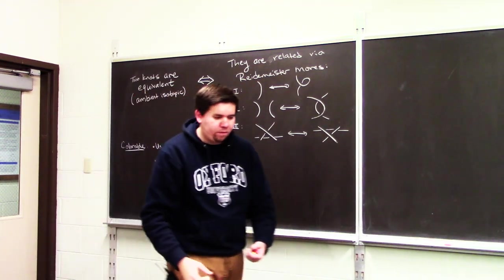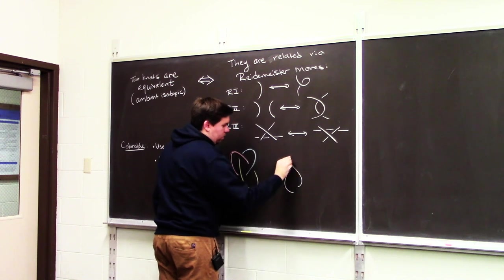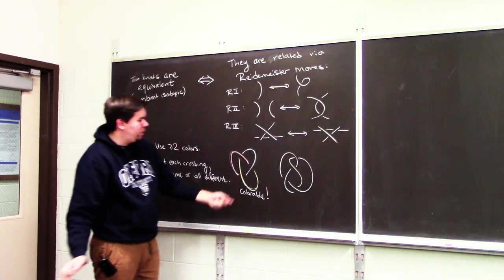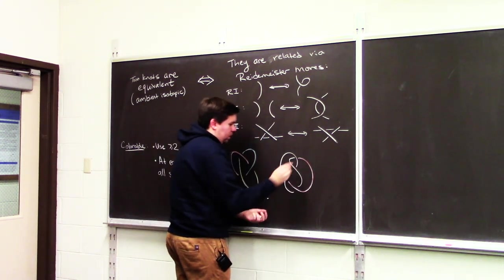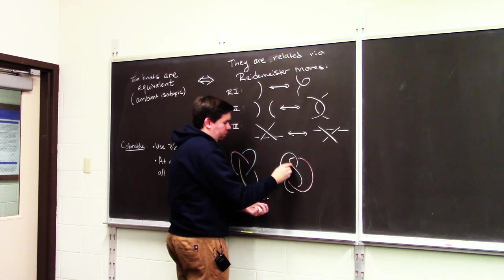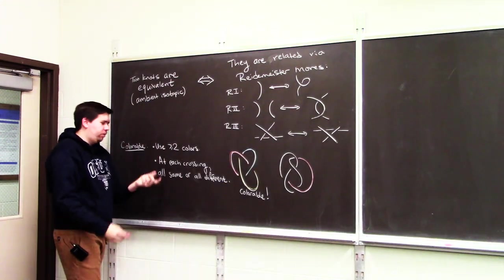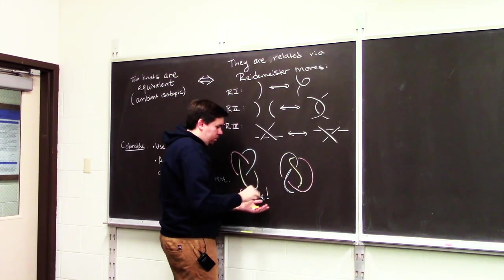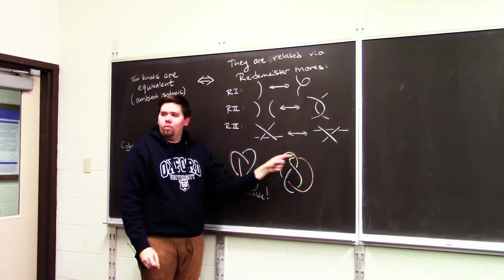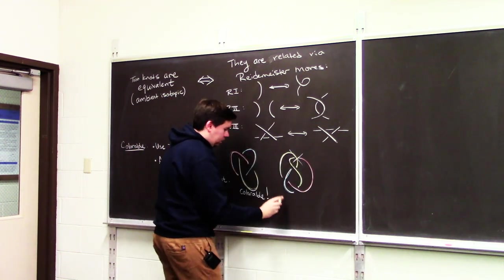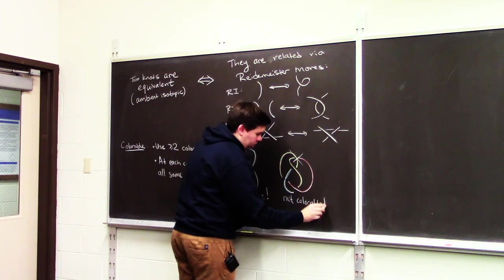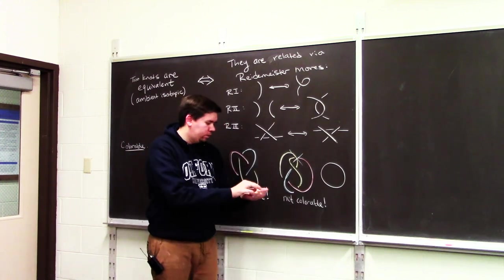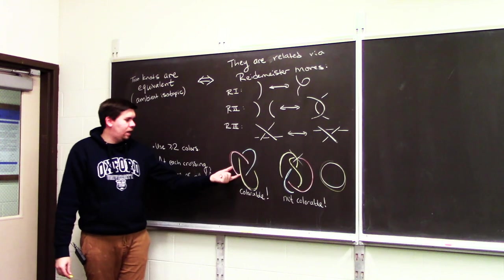If you take something like the figure-eight knot, it fails to be colorable. We convinced ourselves there's no way to color it: if you try red, it all ends up red, violating the first condition. If you try yellow, you get red and yellow, so it must be all different — blue — then red and blue means yellow, but then you get a contradiction with two yellows and one red. So the figure-eight is not colorable. The unknot is also not colorable — you just use one color. This gives us two buckets to distinguish knots.